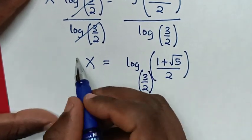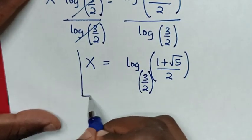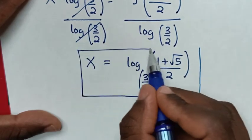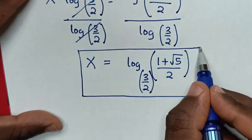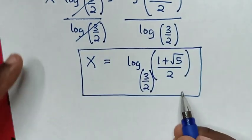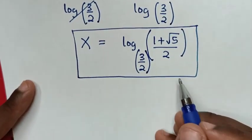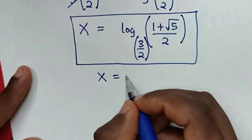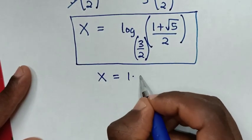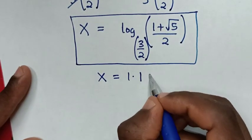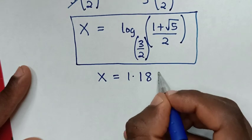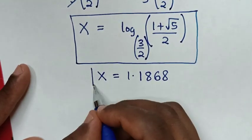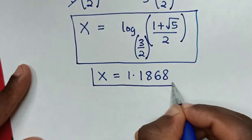This is the final answer for the value of x. Substituting into a calculator gives x ≈ 1.1868. Thank you for watching.